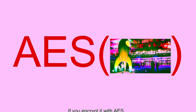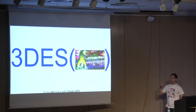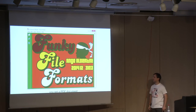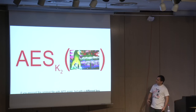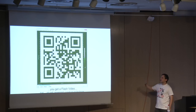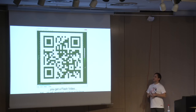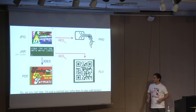You can play further. If you apply AES on this picture — it's a JPEG picture — then you get a PNG picture. If you decrypt it with Triple DES, then you get a PDF. If you encrypt the same file once again with a different key with AES, you get a Flash video. I could go on and on with a proof of concept — I thought I could do a whole talk on a single file.